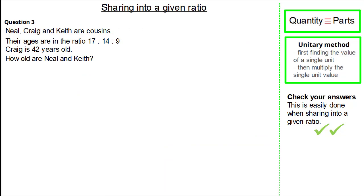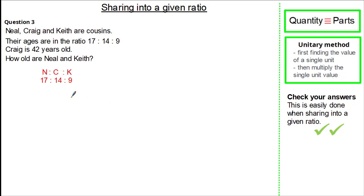Now let's look at a different sharing-into-a-given-ratio question, still using the two key points: identifying the parts and equivalent quantity, and the unitary method. Neil, Craig and Keith are cousins. Their ages are in the ratio 17 to 14 to 9. Craig is 42 years old. How old are Neil and Keith? Let's list our ratios: Neil to Craig to Keith in the ratio 17 to 14 to 9. Craig is 42 years old, and since Craig has 14 parts, we know 42 years is equal to 14 parts.